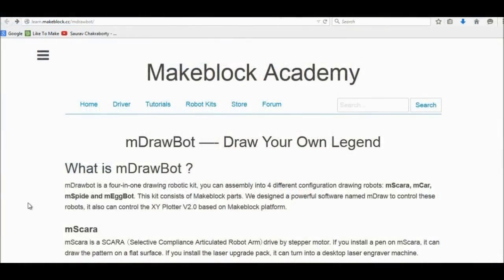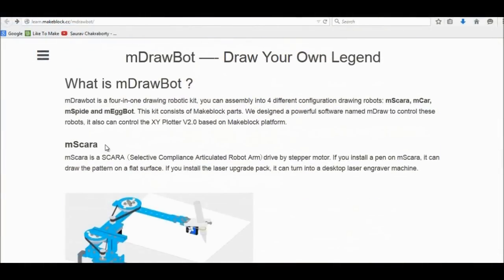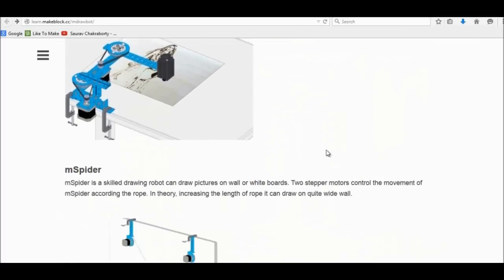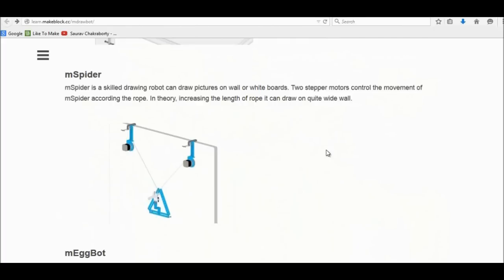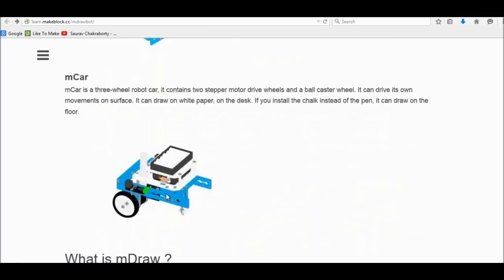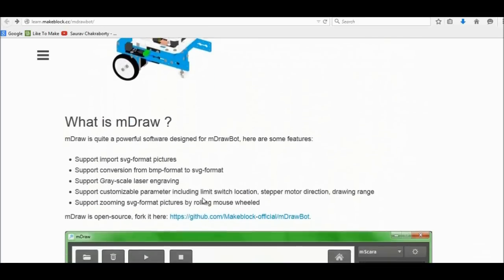It can draw on the board. On their website they're talking about the mDraw board. You can make four robots. First, mScara, which is a robotic arm which can draw on paper. Next is mSpider which can draw on a vertical surface like on a board or on a wall. Nice idea. And the next is mEggBot which can draw on a curved surface like an egg. And the last one is mCar which can run on the floor.